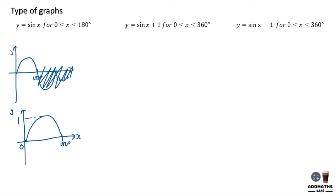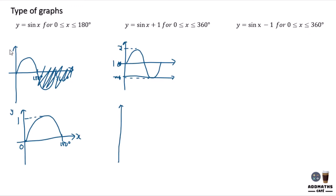Now you are required to sketch y equal to sin x plus 1. Sin x will be this way — this is sin x, with maximum 1 and minimum negative 1. If plus 1, it means you add 1 to every y-value. So this y will become 2, 0 will become 1, and your negative 1 will become your x-axis. Let me redraw: your x-axis is now at the most bottom, and your 1 here will be the starting point.